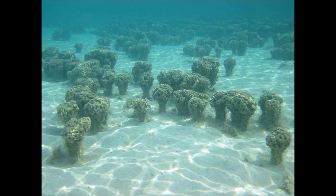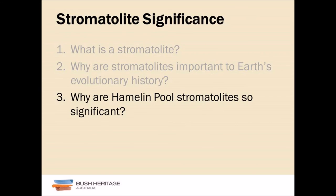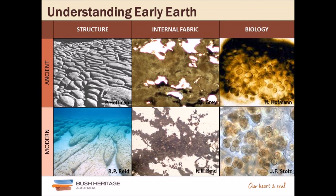Modern stromatolites were often believed to be poor analogs to ancient stromatolites because they're so grainy — they trap and bind sediments. That is true; Hamlin stromatolites are often composed of trapped and bound grains. But these microbial communities also build their own cement frameworks. Hamlin helps us understand early Earth.